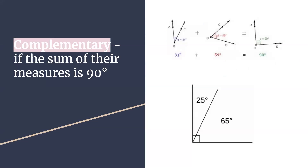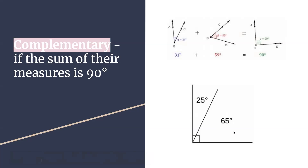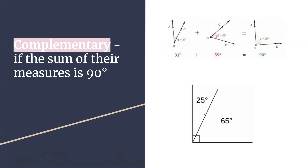A complementary angle is when the sum of their measures adds up to 90 degrees. This goes back to yesterday — a 90-degree angle, or if you see this little box, tells you that it is a right angle. Right angles always add up to 90 degrees. So in your homework there will be questions like: is 25 degrees and 65 degrees a complementary angle? The answer is yes — 65 plus 25 equals 90 degrees, so it is a complementary angle.